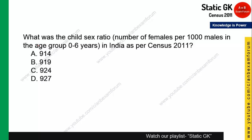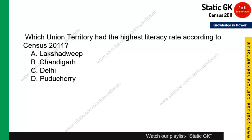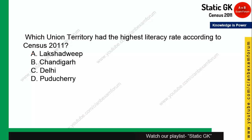Question 12: What was the child sex ratio as per Census 2011? Child sex ratio refers to the age group of 0 to 6 years. The normal sex ratio is 940, but the child sex ratio is 914 — remember this figure. Question 13: Which union territory had the highest literacy rate according to Census 2011? Among the options, Lakshadweep is the correct answer.